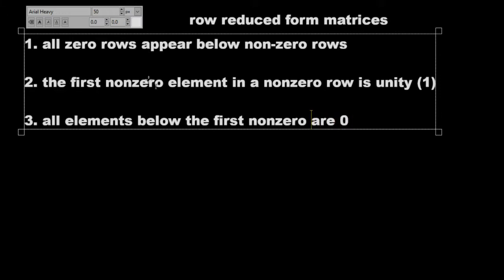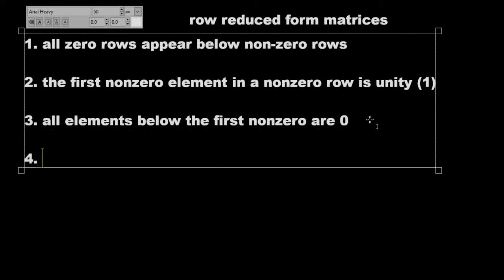So basically, whenever the first non-zero element in a non-zero row is unity, directly below that all the elements must be zero. And the last rule for a row reduced matrix is that the first non-zero element of any non-zero row appears in a later column